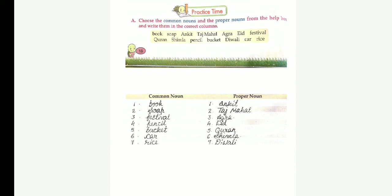So, I am asking a question. Which is a common noun? Options: Car, Eid, Agra. Which is the common noun? Answer: Car. And Agra and Eid are proper nouns. Another question. Which is the proper noun? January, pencil, soap. Which is the proper noun? Answer: January. This is special name.